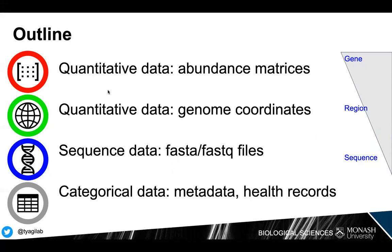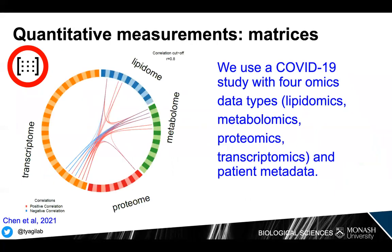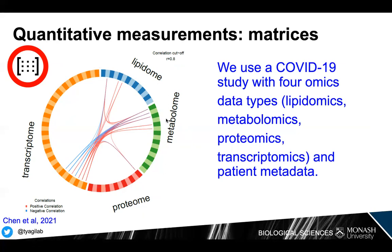The four classes are: quantitative data in the form of abundance matrices, quantitative data in the form of genome coordinates, sequence data in the form of FASTA or FASTQ files, and categorical data or metadata including patient health records. The first data type is quantitative measurements in the form of matrices — very common, for example, in transcriptomics data shown as count tables or adjusted count tables. We use an example study with four different omics data types: lipidome, metabolome, proteome, and transcriptome, as matrices generated from next-generation sequencing or mass spectrometry.